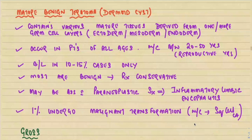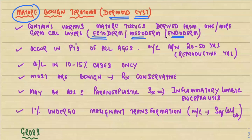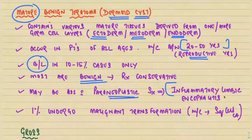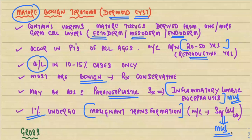Mature benign teratoma is also called dermoid cyst — an important exam gross specimen. It contains various mature tissues derived from one or more germ cell layers (ectoderm, mesoderm, endoderm). It occurs in all age groups but is more common in women 20–50 years. It is bilateral in only 10–15 percent of cases; most are benign and treated conservatively. It may be associated with paraneoplastic inflammatory limbic encephalitis. Only one percent undergo malignant transformation, most commonly forming squamous cell carcinoma.